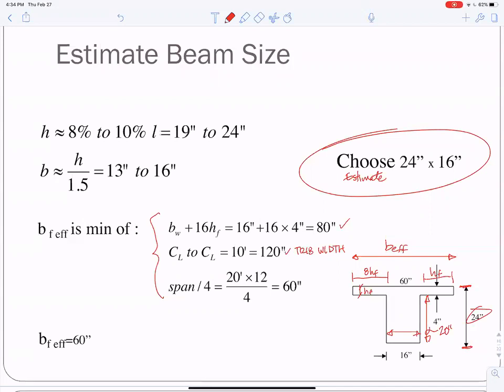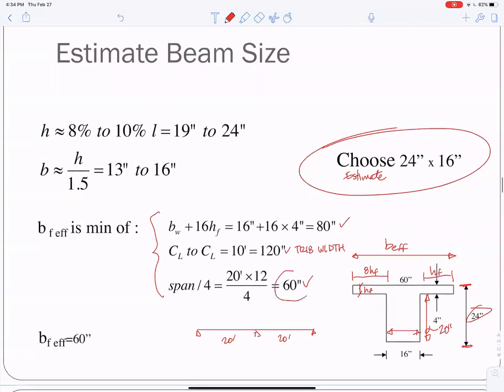And the last one is the span over 4. This beam was two 20 foot spans, so 20 feet over 4 is 5 feet, which is 60 inches. So the least of these is the 60 inches. B effective is 60 inches. Our T-beam has a top width of 60 inches and a slab thickness of 4 inches. That's quite a bit of concrete on the top.